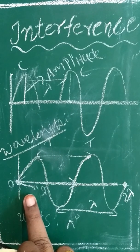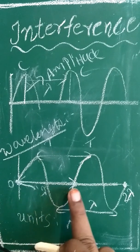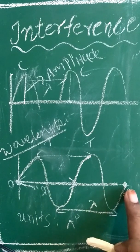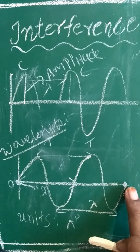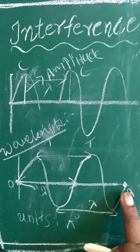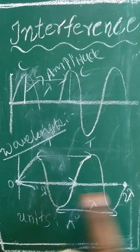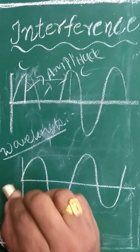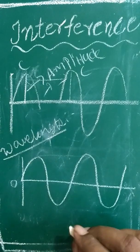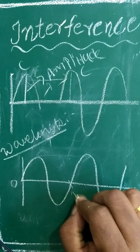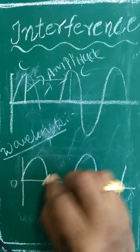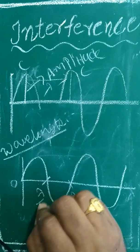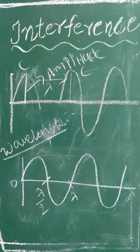One complete cycle — one complete crest and trough — is one wavelength, lambda. Lambda plus lambda means from the origin this position is 2λ. If we consider this one as lambda, then this midpoint position is called the lambda-by-2 (λ/2) position.